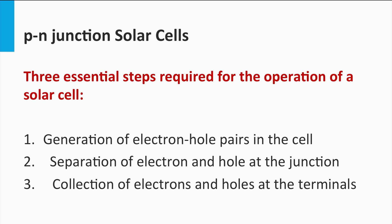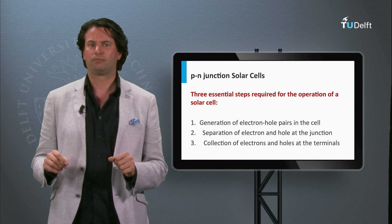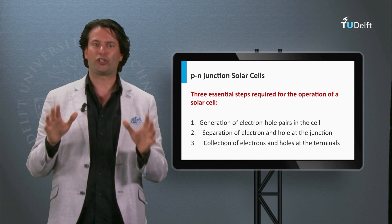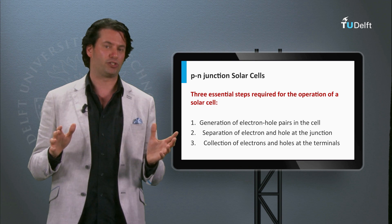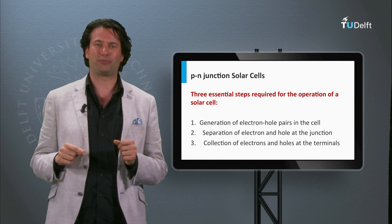We are now familiar with the working principle of a solar cell. Under week 2 you will find a collection of exercises to further your understanding of semiconductor materials, charge carrier transport, and p-n junctions. Next week we will look at how we can determine the performance of solar cells using external parameters like the short-circuit current density and the open-circuit voltage, and discuss design rules to optimize solar cell performance. See you next week!